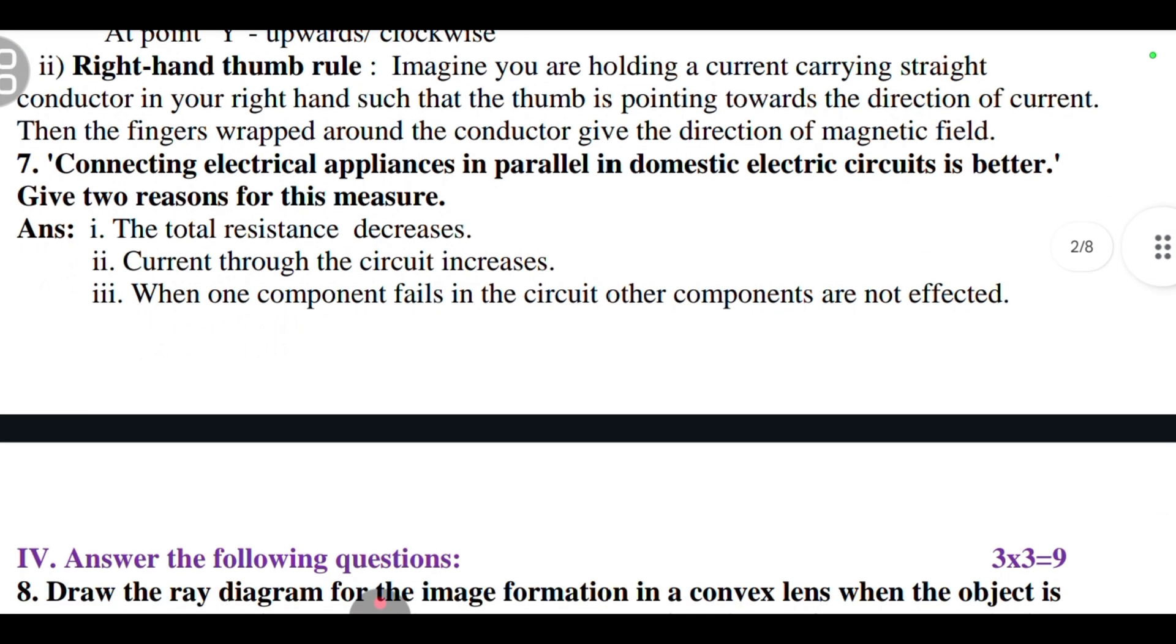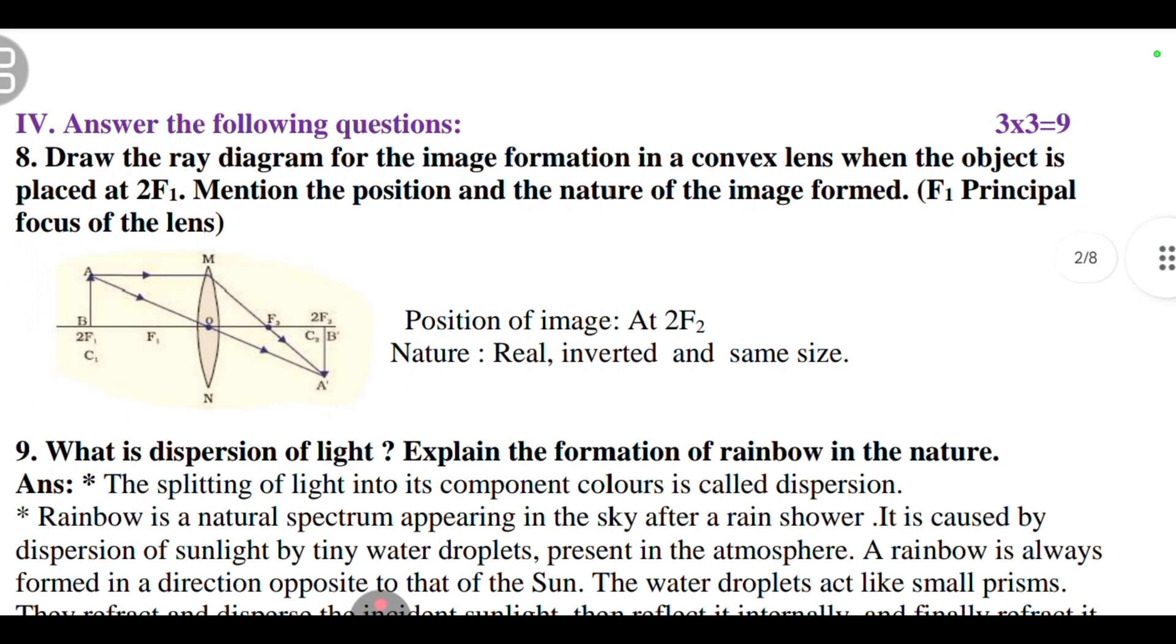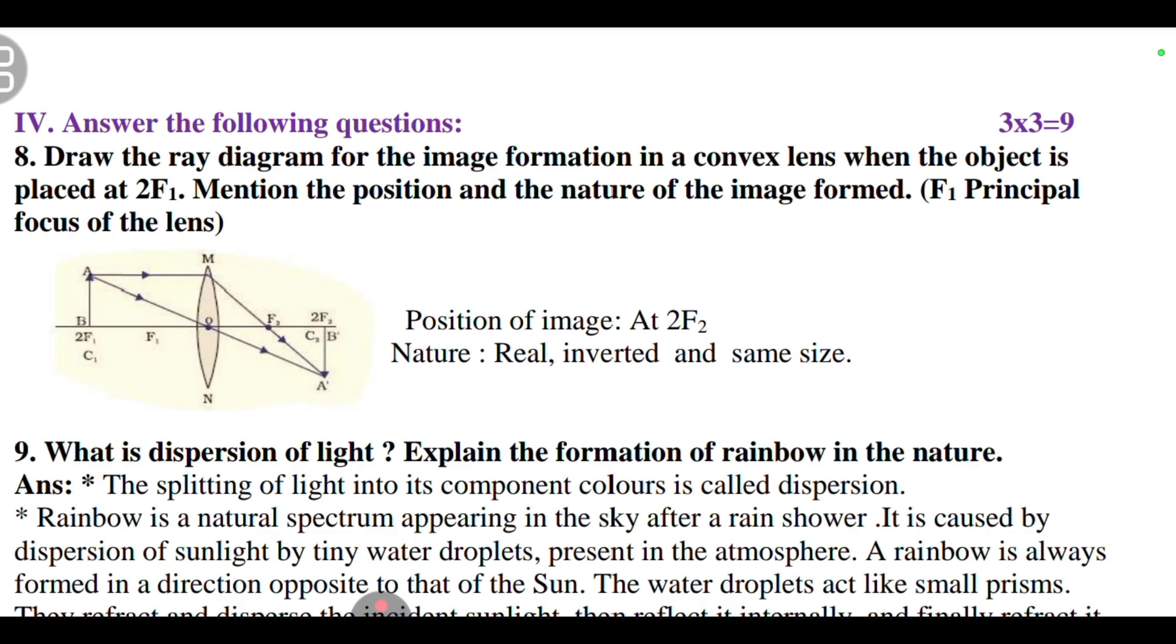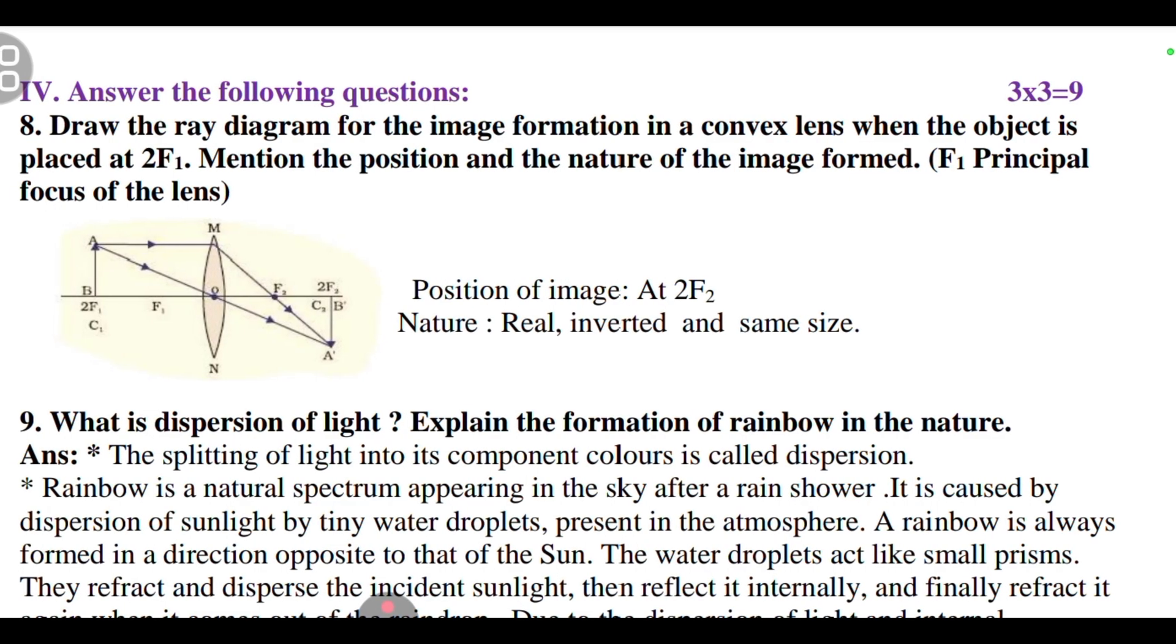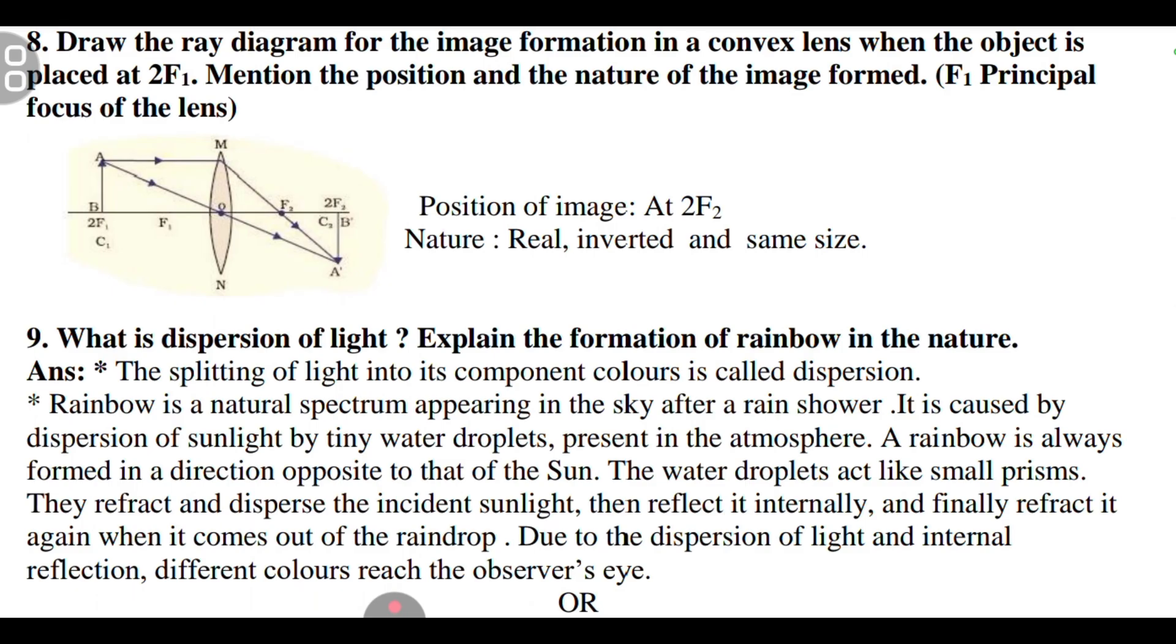They have asked: mention the direction of the magnetic field that forms around at point X and Y. And second is, state the rule that helps to decide the direction of the magnetic field. Answers are here, so you can get the answer. And seventh question: connecting electric appliances in parallel in domestic electric circuits is better. Give two reasons for this. Coming to the fourth, then answer the following question.